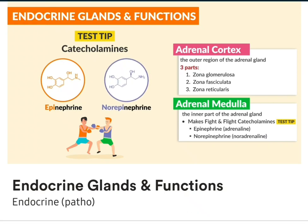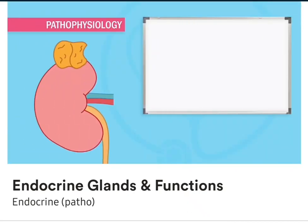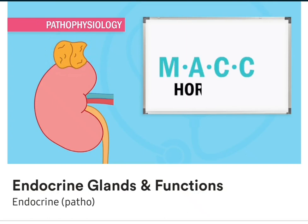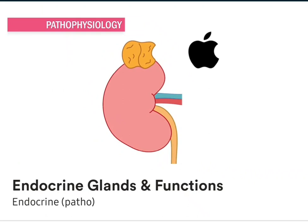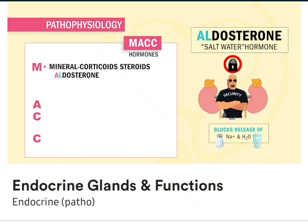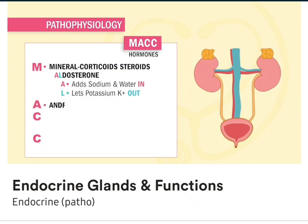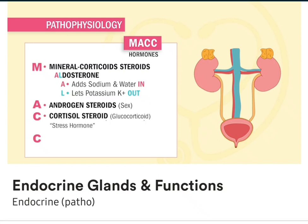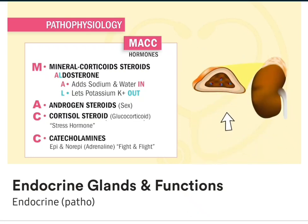The adrenals sit on top of the kidneys and help the body adapt to stress by using MAC hormones. Just like MAC computers, the adrenals look like the Apple logo. Remember the acronym MAC: M stands for mineralocorticoids, like aldosterone — our steroid hormone security guard bouncer to the kidneys in the renin-angiotensin-aldosterone system. Al adds sodium and water in to balance blood pressure, and lets potassium out of the body. Next is A for androgen steroids, to help with hair and sex. And our first C is for cortisol steroid, our famous stress hormone. Lastly, C is for catecholamines — epi and norepi, also called adrenaline — fight-and-flight hormones which increase heart rate and blood pressure.